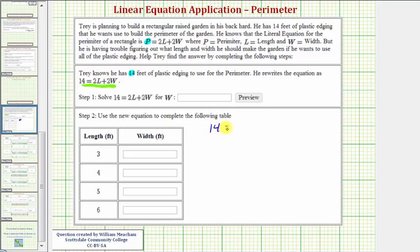So we have the equation 14 equals 2L plus 2W. And our goal here is to solve the equation for W. So our first step is to isolate the W term. To do this, we'll subtract 2L on both sides of the equation.